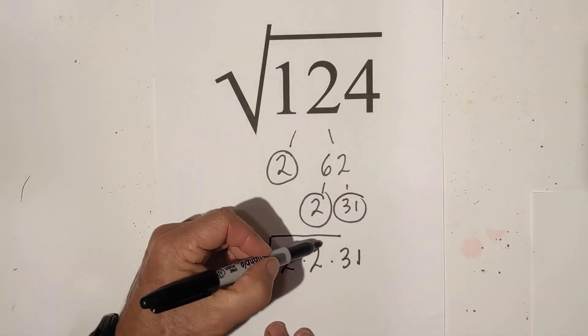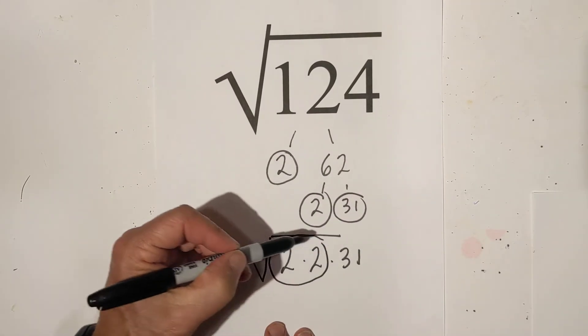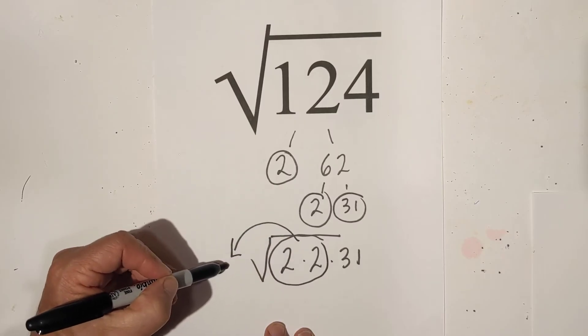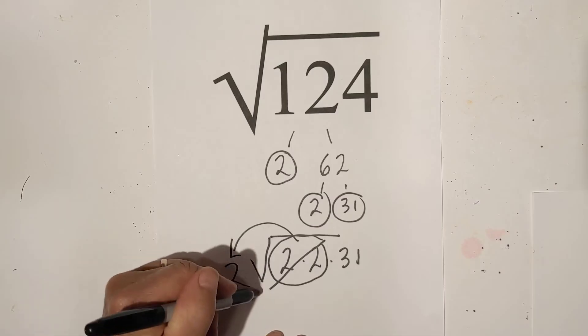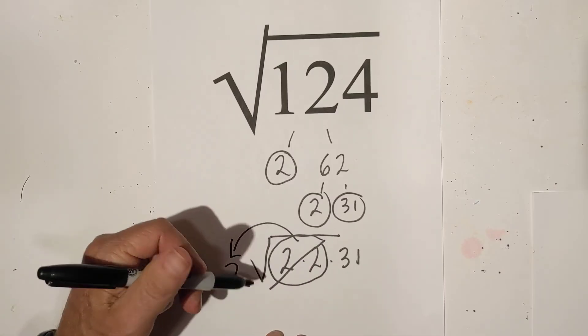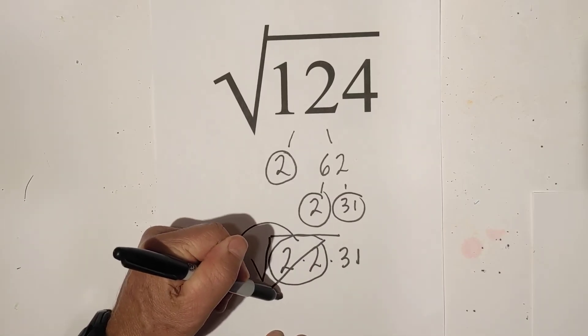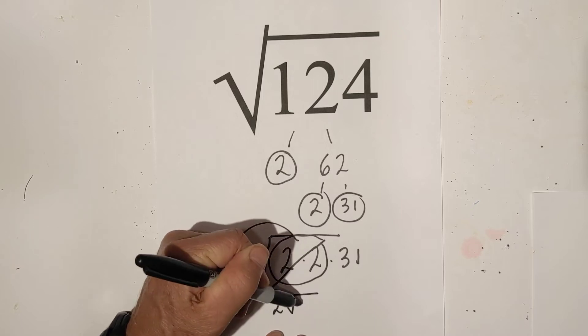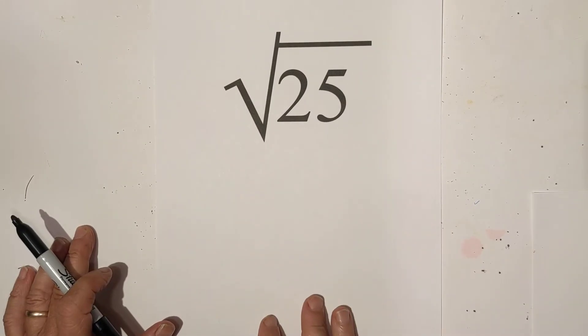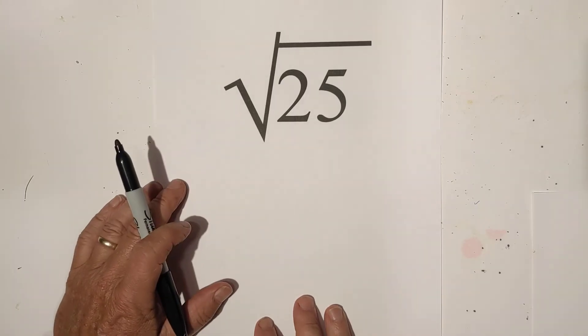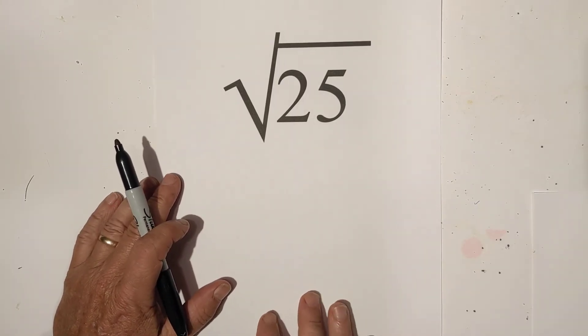Remember we can pull out pairs. So here is the pair. Cross these out. And I have thirty one still under the radical sign. So I can rewrite it as two square root thirty one. Sorry about that. My dog started barking. And I had to do something about that.